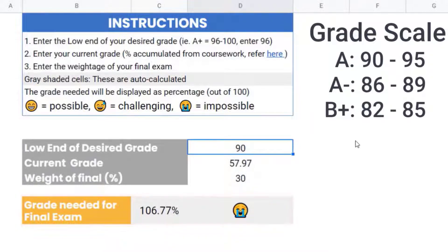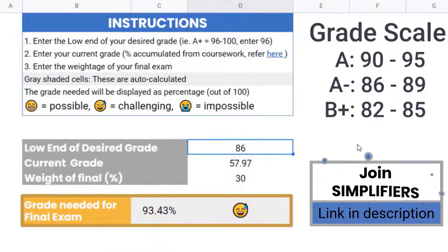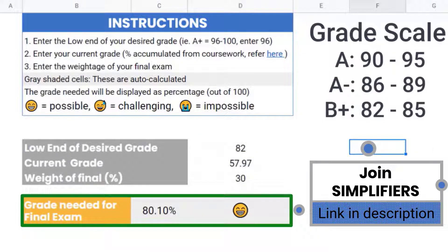Let's try for an A minus. It's possible. You need 93% in your finals. Just a tad challenging. How about B plus? That's much easier. You'll need 80.1% in the finals to walk out with a B plus in the course.